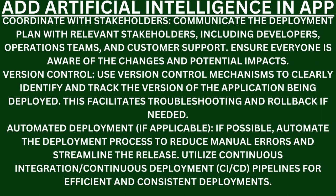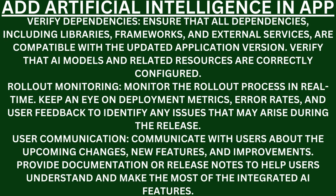Coordinate with stakeholders. Communicate the deployment plan with relevant stakeholders including developers, operations teams, and customer support — ensure everyone is aware of the changes and potential impact. Version control. Use version control mechanisms to clearly identify and track the version of the application being deployed — this facilitates troubleshooting and rollback if needed. Automated deployment. If possible, automate the deployment process to reduce manual errors and streamline the release. Utilize CI/CD pipelines for efficient and consistent deployments. Verify dependencies. Ensure all dependencies including libraries, frameworks, and external services are compatible with the updated application version, and that AI models and related resources are correctly configured.